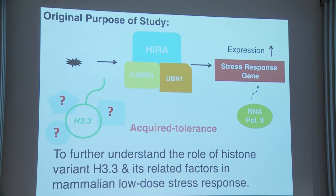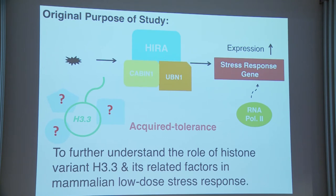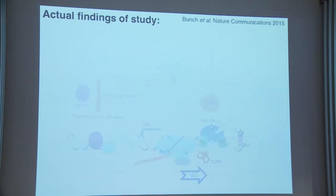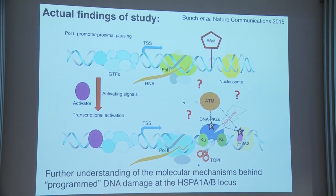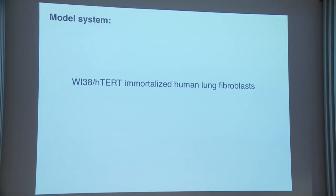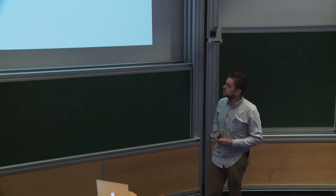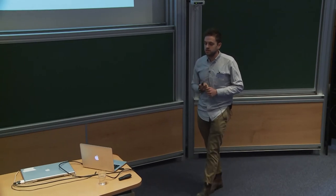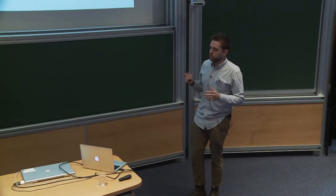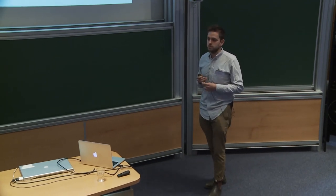The original purpose of my study was to figure out what H3.3 is doing in this low-dose stress response model, but I ended up investigating these two stories and connecting them. The model I used was WI38 H-TERT immortalized human lung fibroblasts, plus a couple of other cell lines to confirm the findings weren't cell-type specific. The first step was to identify interactors of histone H3.3 by IP mass spectrometry, and then verify the top hits using immunoprecipitation and immunoblotting.